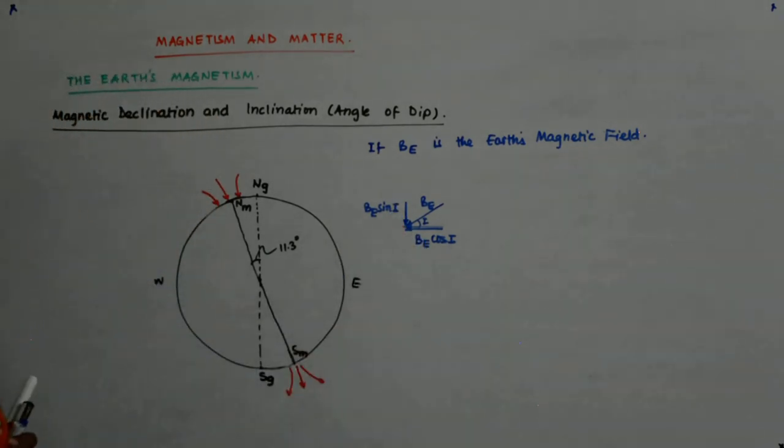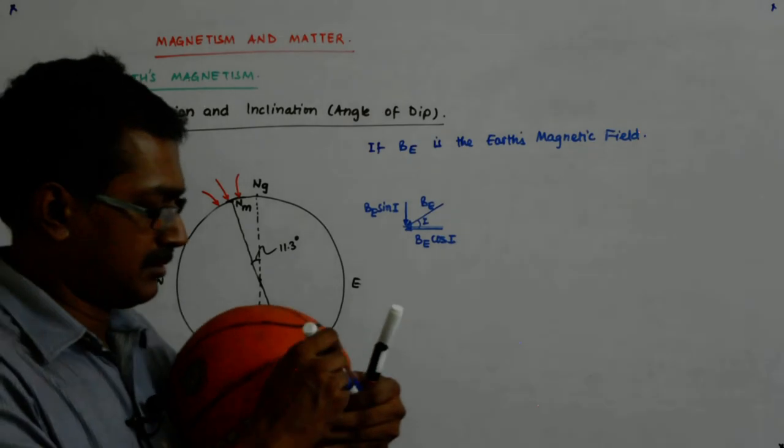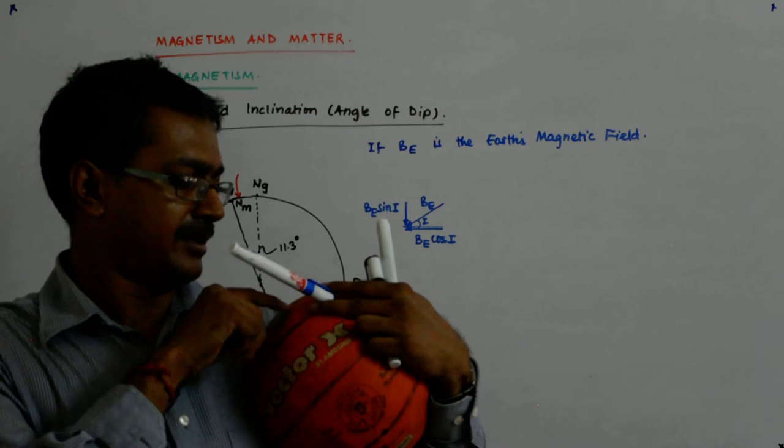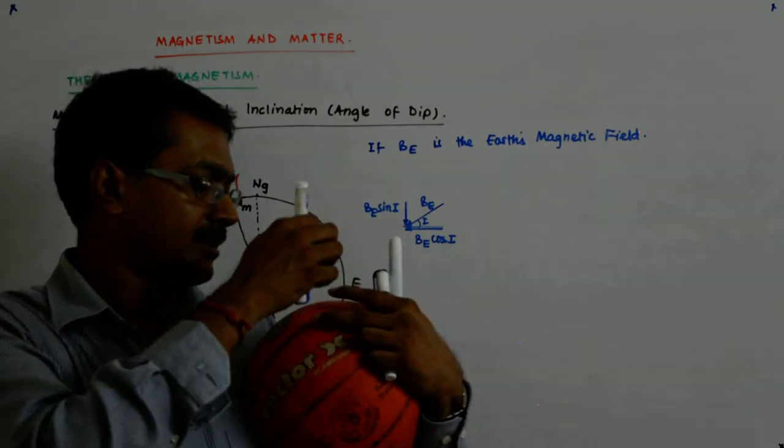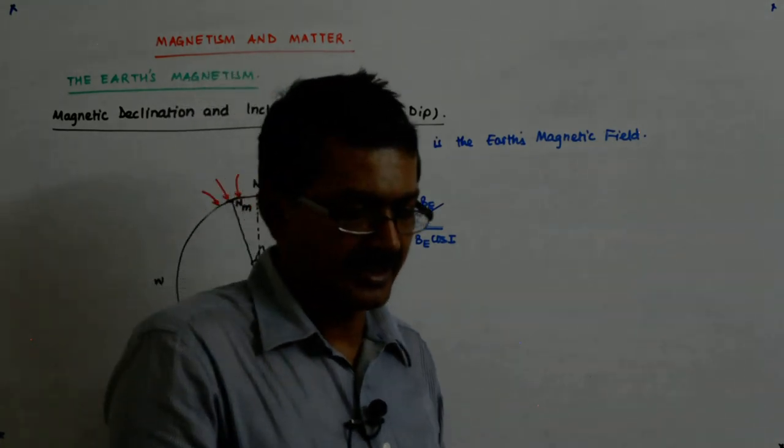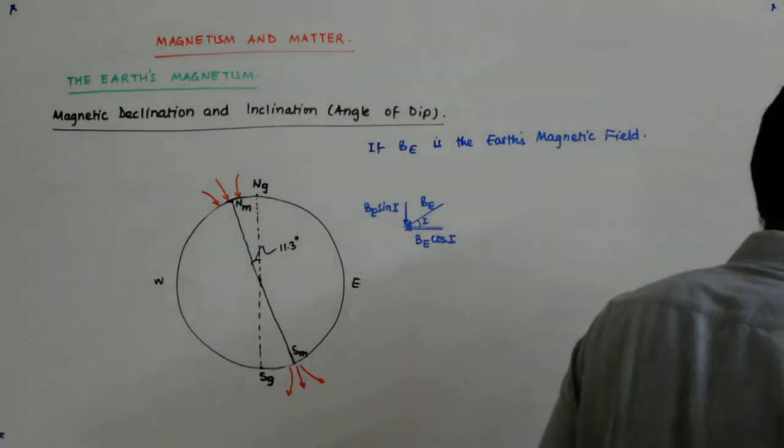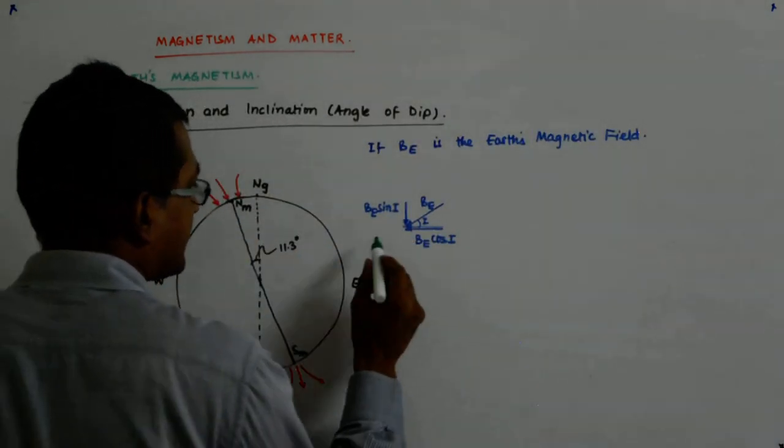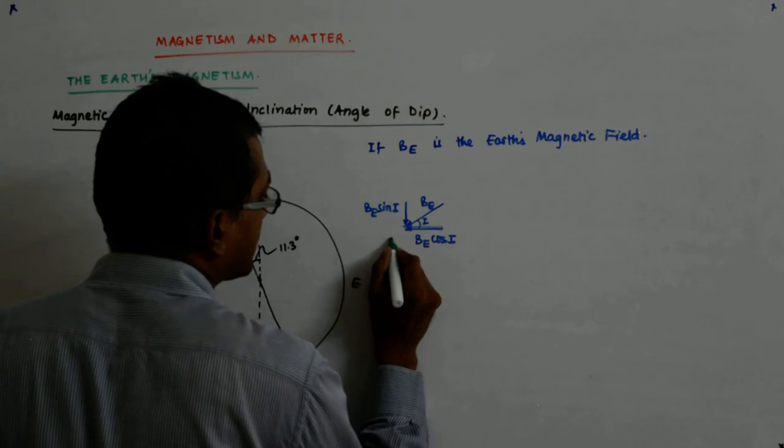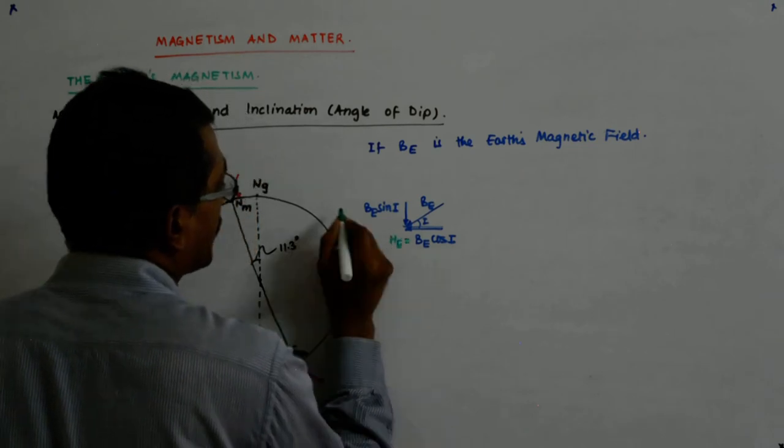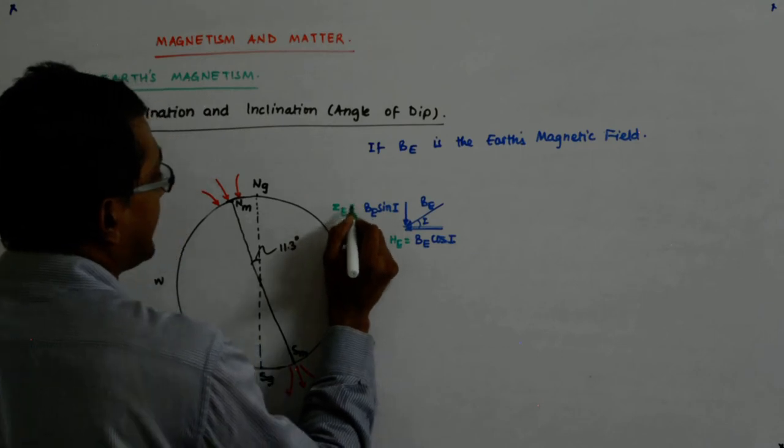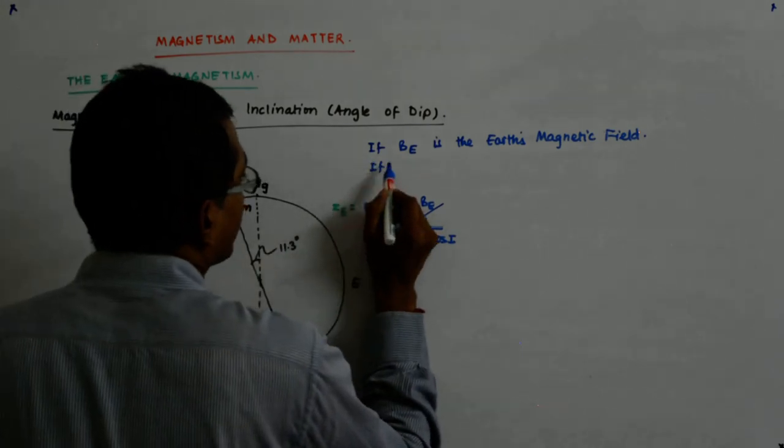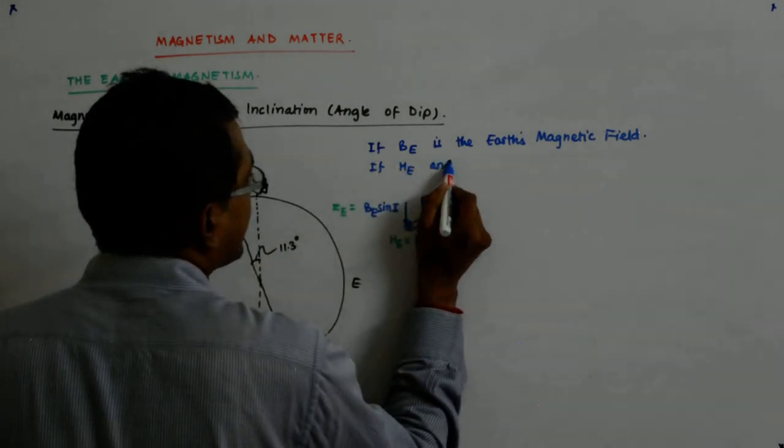Do we understand that this is a vector? This angle is I. I resolve it. This component is Be cos I and the vertical component is Be sin I. I call the horizontal component as HE and the vertical as ZE.